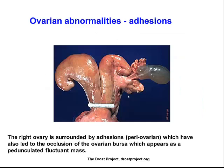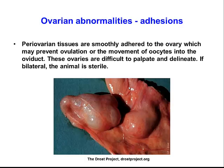Here are some more adhesions. In this case the ovarian tissue is involved in an adhesion, and the ovarian bursa is also adhered to the ovary. If this prevents the oocyte from entering the oviduct, that can be a source of infertility — particularly if it is bilateral. This is another example of a tight adhesion around the ovary which may interfere with fertility.